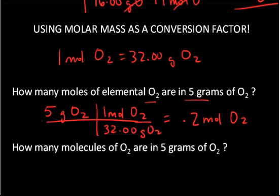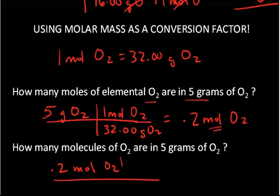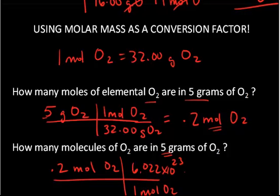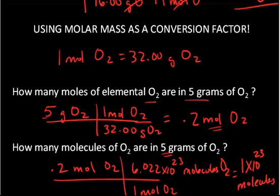I'm rounding to 1 sig fig — it's about 0.15 or 0.16, but rounding gives 0.2. How many molecules of oxygen are in 5 grams? Since I already have the moles, I can start right there: in 0.2 moles of oxygen — which is how much is in 5 grams — for every 1 mole of oxygen I have 6.022 × 10²³ molecules of oxygen. Putting that into my calculator, I get about 1 × 10²³ molecules of oxygen.